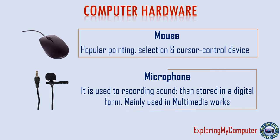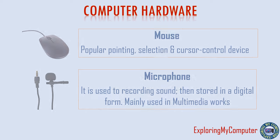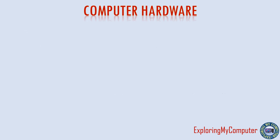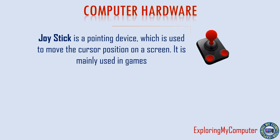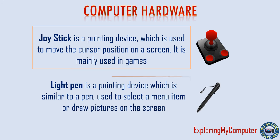Microphone is used to record sound, then stored in digital form. It is mainly used in multimedia work. Joystick is also a pointing device, which is used to move the cursor position on a screen; it is mainly used in games. Light pen is a pointing device similar to a pen, used to select a menu item or draw pictures on the screen.